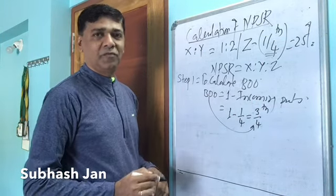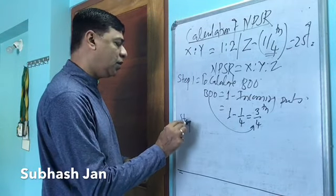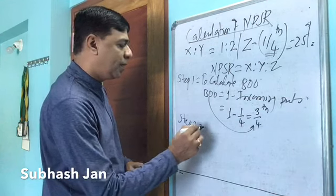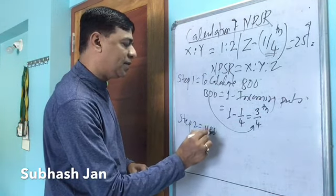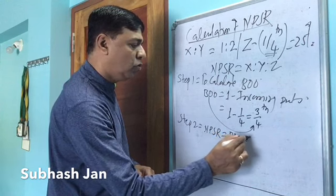Now under step 2, you will get the formula to calculate new profit sharing ratio. And that formula is NPSR, new profit sharing ratio, is equal to balance of 1 into old ratio.